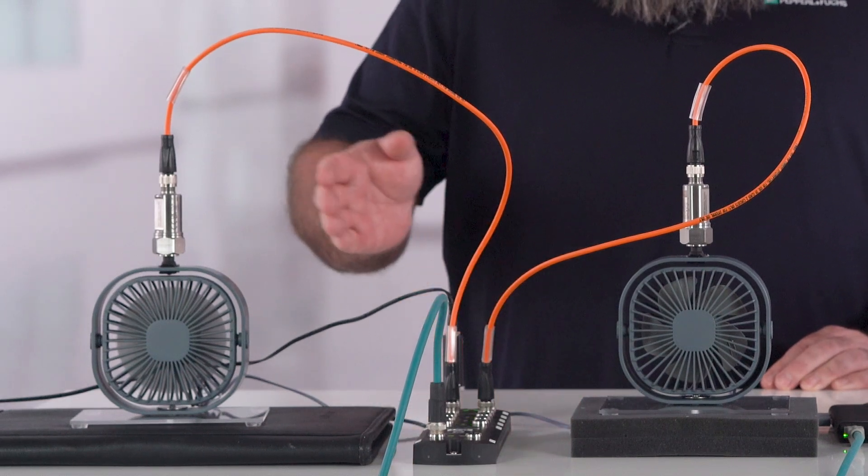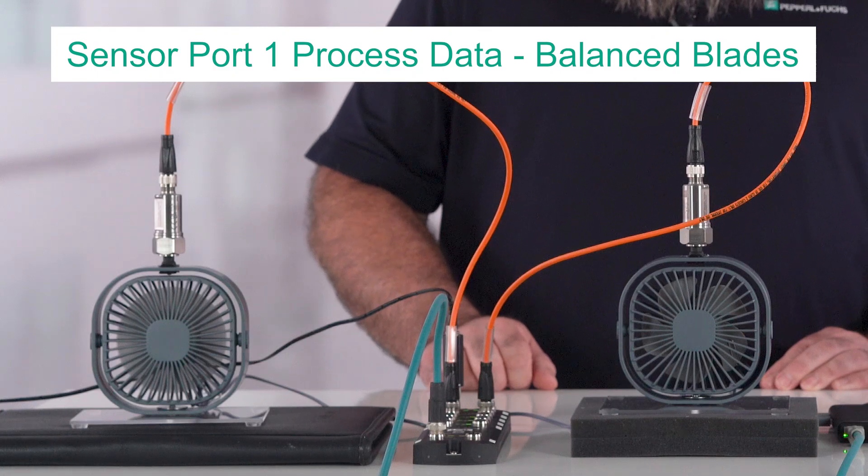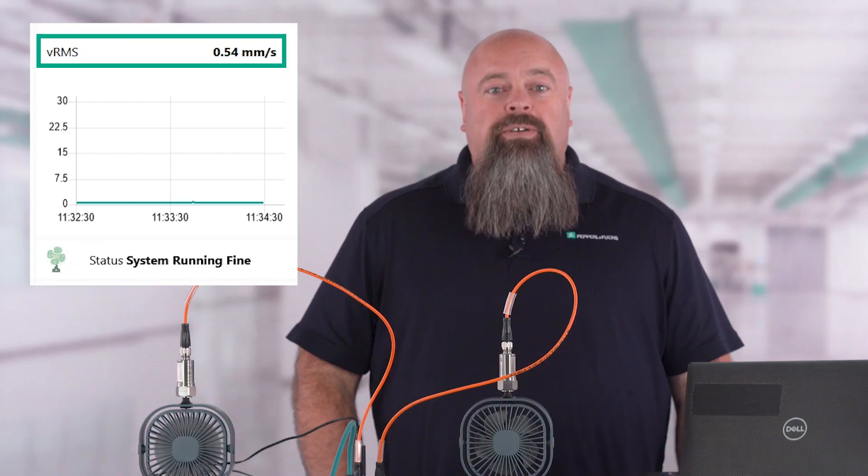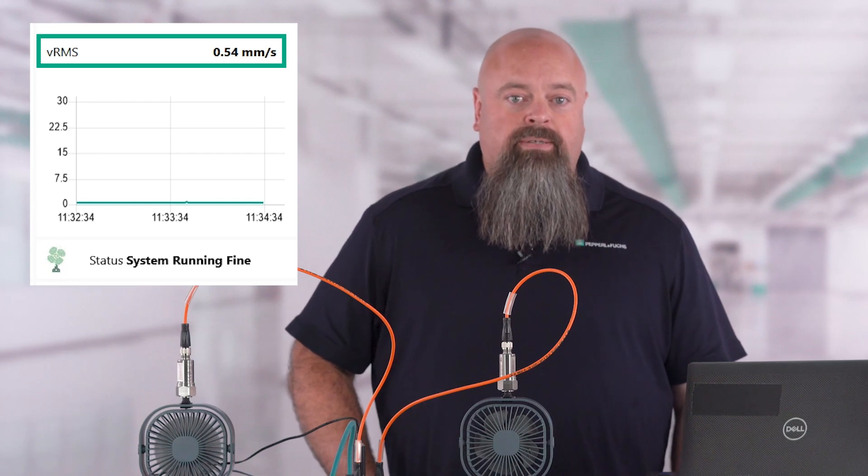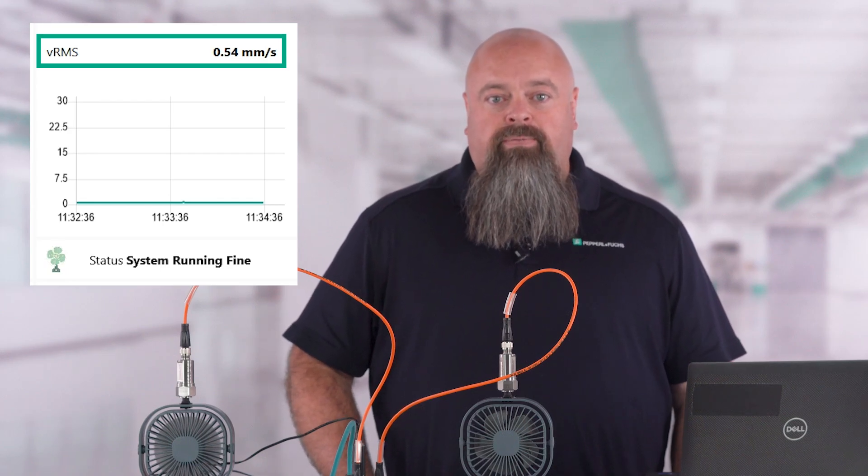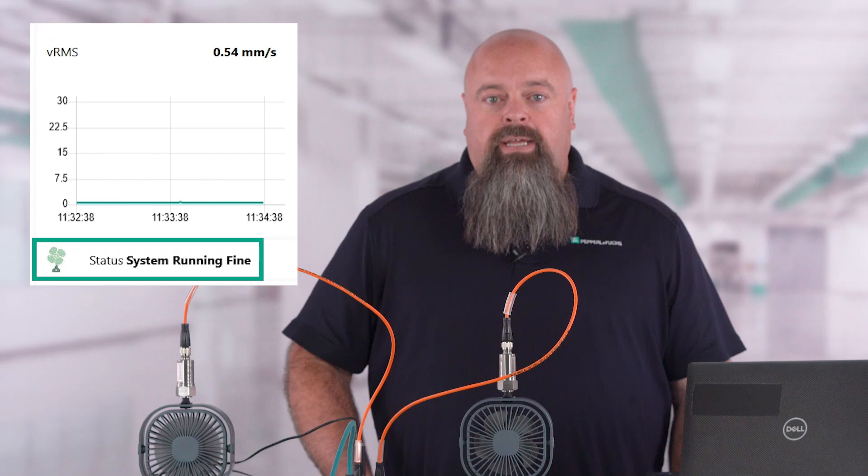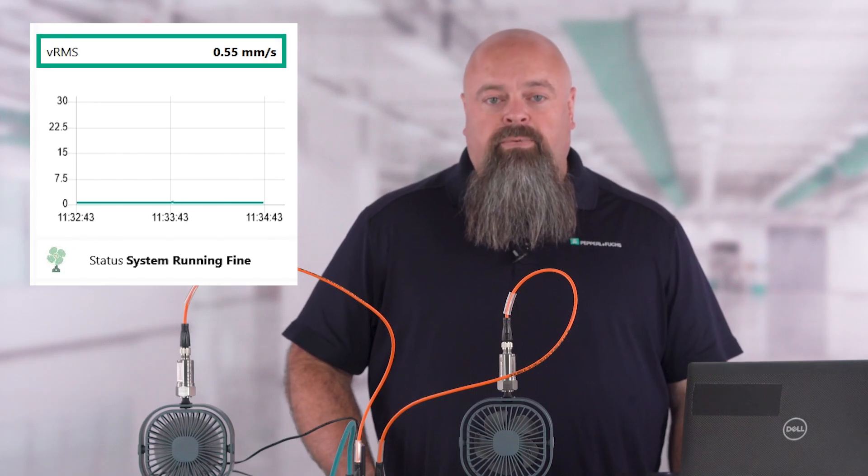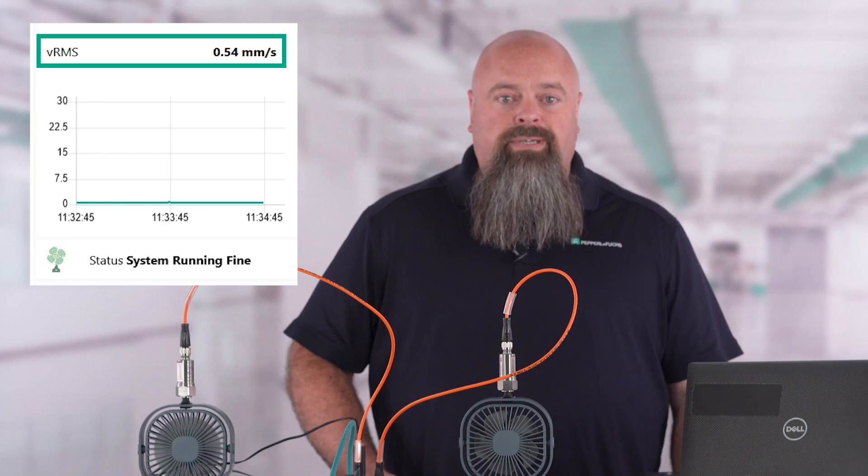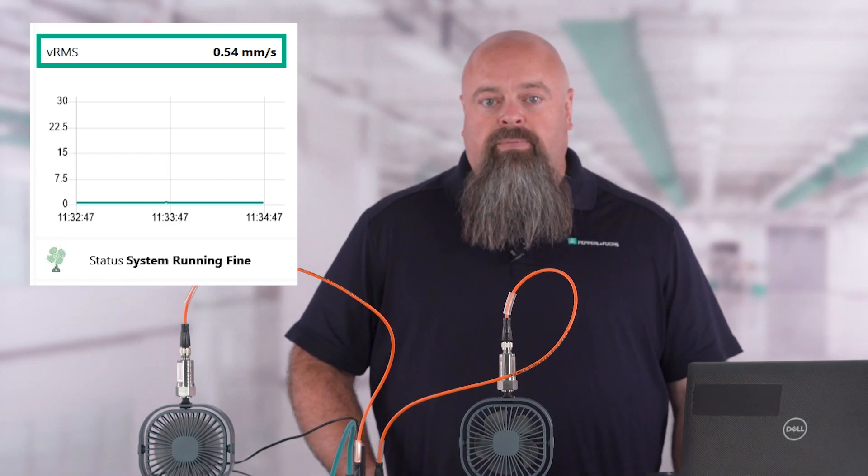The fan on the left is running, represented by the top line labeled Sensor Port 1 for balanced blades. You can see it has regular vibration with an RMS velocity or VRMS holding steady around 0.55 millimeters per second, and the fan icon indicates the system is running fine. In this example, the customer would use this value to represent a normal vibration for a balanced fan.